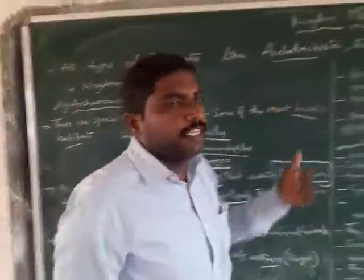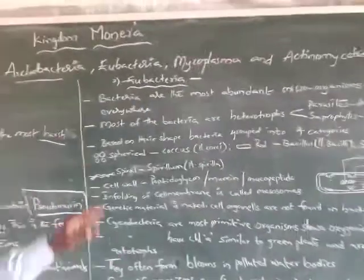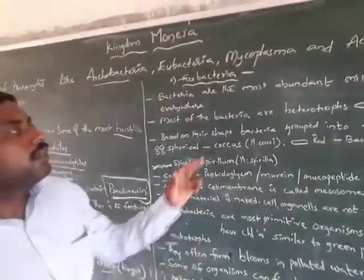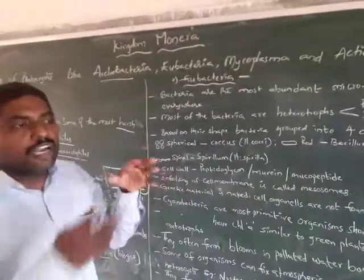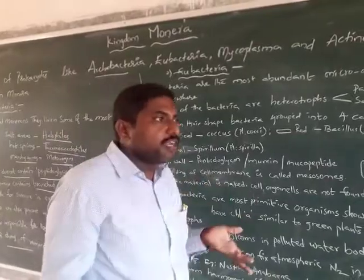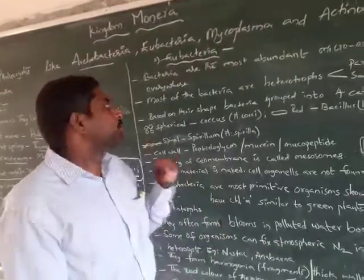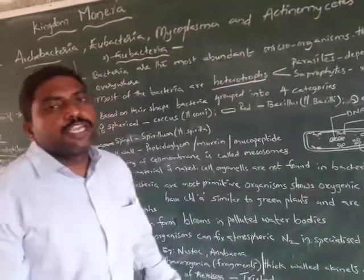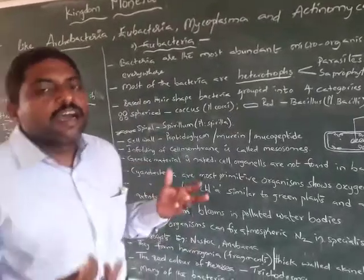Now we enter into eubacteria. Bacteria are the most abundant microorganisms; they occur almost everywhere — in air, water, atmosphere, and on or inside the bodies of plants and animals. Most bacteria are heterotrophs, meaning they cannot synthesize their own food and are dependent on other organisms.